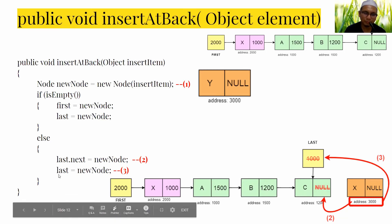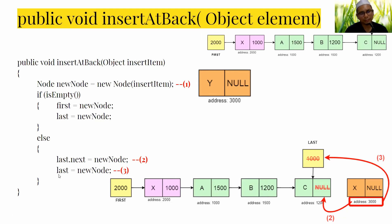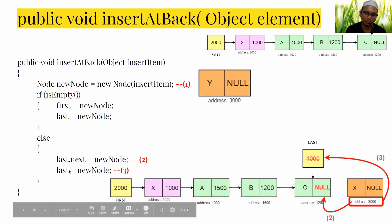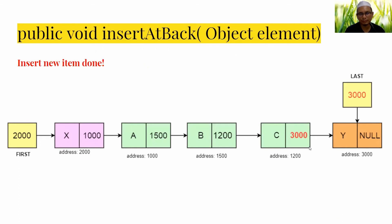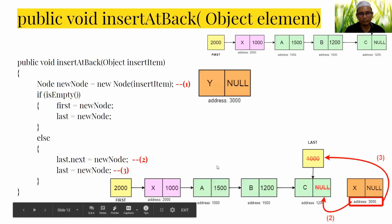Next, we copy the new node into last so that last always points to the last node in the list. The new node now becomes the last node. The previous last node points to Y, and last now points to the new last node containing Y.